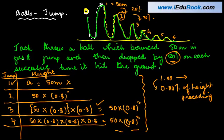Or you can also write this as 50 meters into 0.8 to the power 0. Because 0.8 to the power 0 is actually nothing but equal to 1. When you are hitting it for the second time, it hit 50, which is the original height, into 0.8 to the power 1. So the power of 0.8 is 1 in the second jump. In the third jump, it is 0.8 to the power 2. In the fourth jump, it is 0.8 to the power 3.